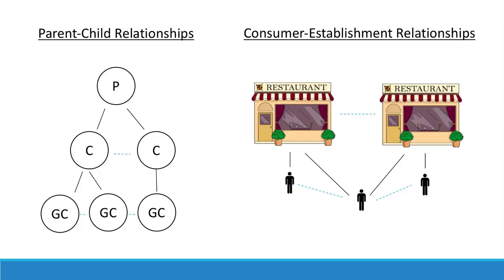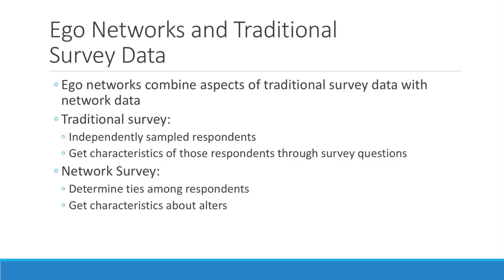You can often have multiple relationships concurrently. Here are a couple examples of networks you might not have thought of as networks. A parent-child relationship: a parent is connected to their child, and their child is connected to other children. You could think of a parent and their grandchild as two steps away — two edges between them. Or you could look at restaurants: two people who go to the same restaurant have some sort of connection, or two restaurants that share the same consumers have a relationship.